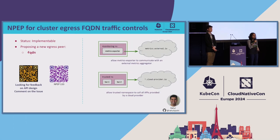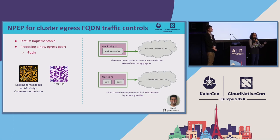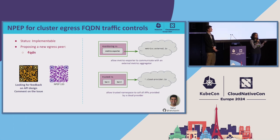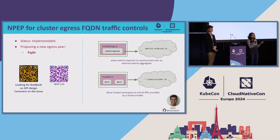The next NPEP is egress FQDN traffic controls — shout out to Rahul who's been working hard on this. User stories are merged. This is an egress peer proposing domains or FQDNs as your peer, being able to express that. We've had many people ask for this in the stable network policy API, but we're not accepting features there, so we're at least doing it in the ANP. The API design is currently happening, and we're looking for feedback.